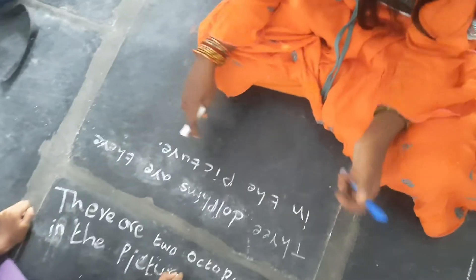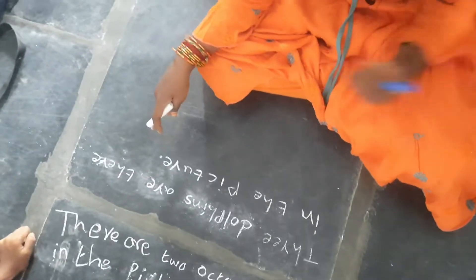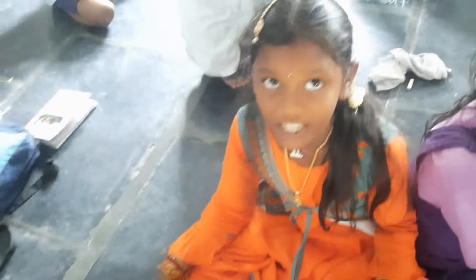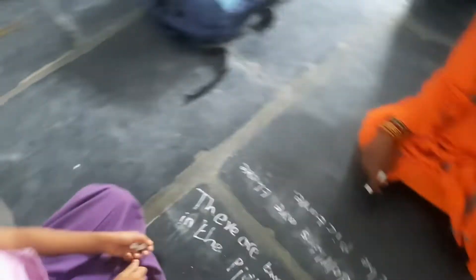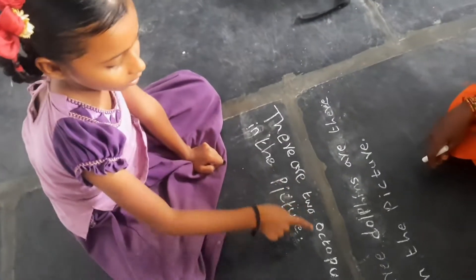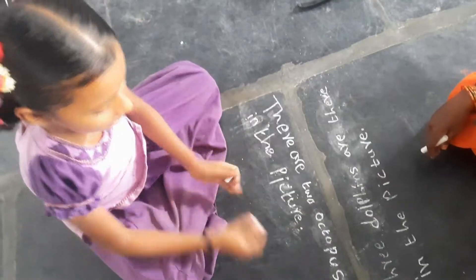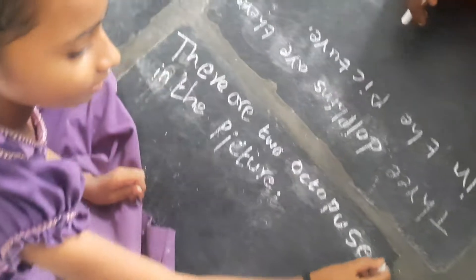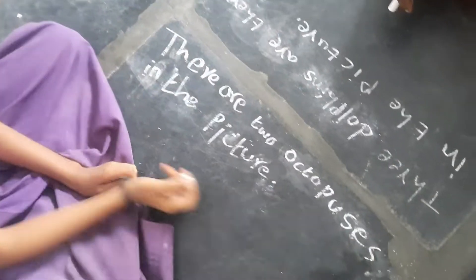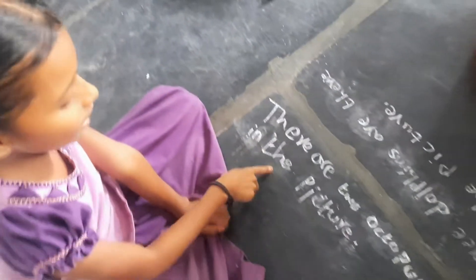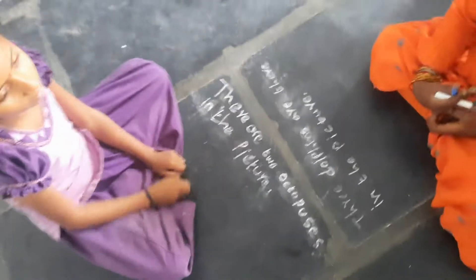Three dolphins are there in the picture. Very good. There are two automobiles in the picture. Very good.